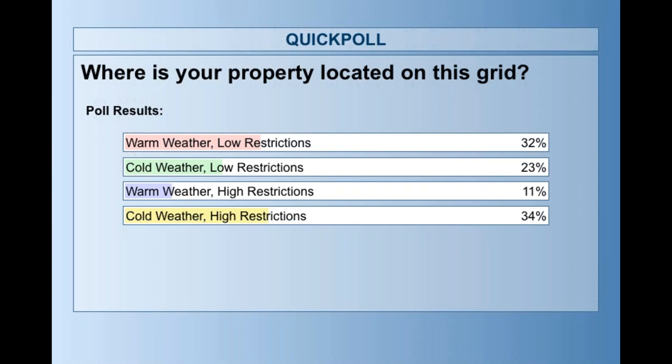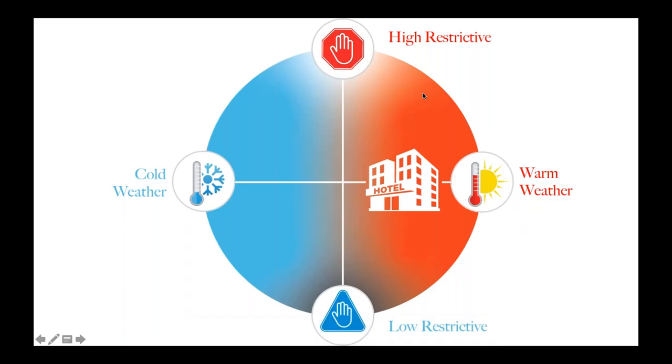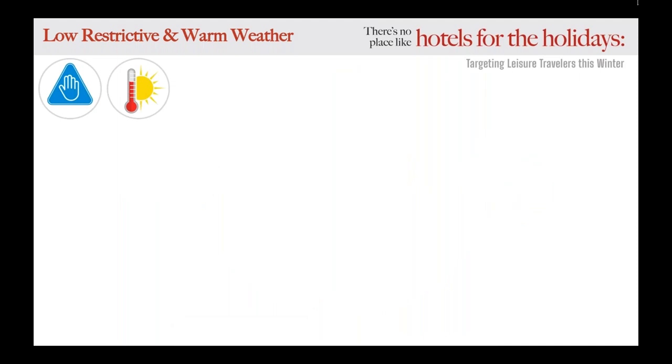It looks like for most properties we have warm weather with low restrictions, or cold weather and high restrictions — interesting. So we're going to go through all four quadrants and strategize a custom plan. Let's start by looking at hotels in the low-restrictive, warm-weather quadrant — about 32 percent of you on this call. A lot of these properties could be located in the Sunbelt or southeastern part of the country, like Florida.